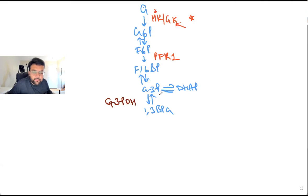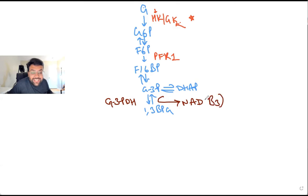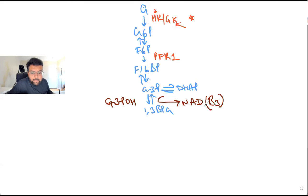What do you produce in this step — ATP or NAD? NAD. What vitamin is needed in this step? You need Niacin — that's vitamin B3 — wherever you see NAD, that's nicotinamide adenine dinucleotide. And wherever there is FAD, which vitamin? Riboflavin — B2.